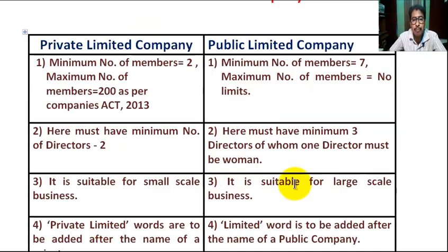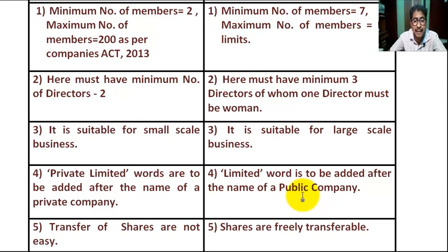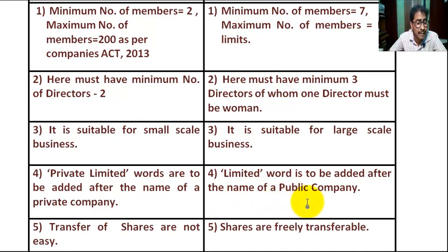In a public limited company, the word 'Limited' is to be added after the name of the company. For example, the name of the company is 'Calcutta Electric Supply Company', so the full name becomes 'Calcutta Electric Supply Company Limited' — abbreviated as CESC Limited.